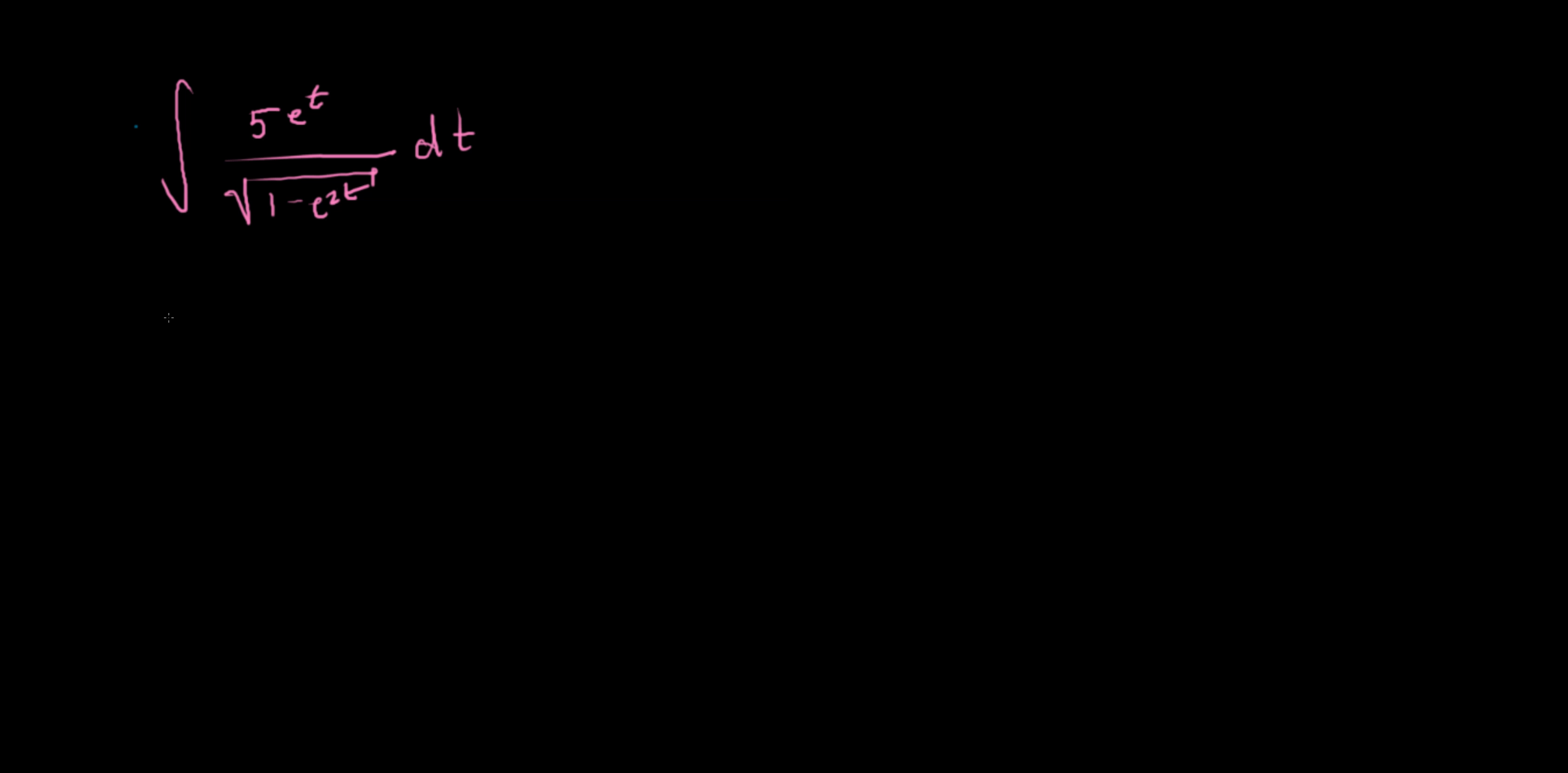I sort of followed the convention to let u equal the harder function to make that go away. So I was thinking let u equal 1 minus e^(2t), but then that doesn't quite work because when you take the derivative of that, du equals... you're gonna keep ending up with this e^(2t), and that doesn't let you get rid of this e^t up top.